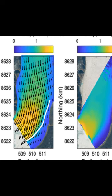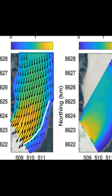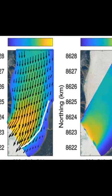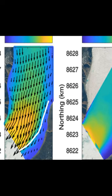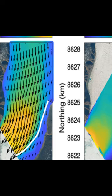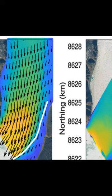Glacial retreats have caused significant increases in global sea levels over the past several decades. Calving, the process by which glaciers shed icebergs into the ocean, is one of the main contributors to this phenomenon.